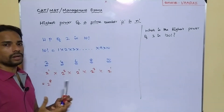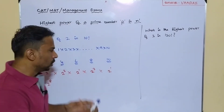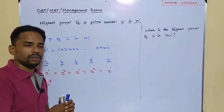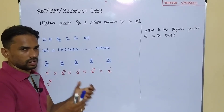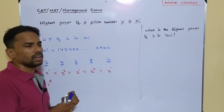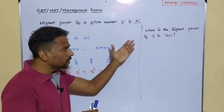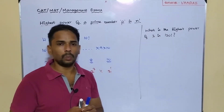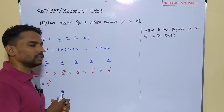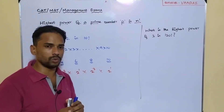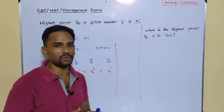But what if we get bigger numbers? Can you even imagine doing the same process for 120 factorial? For a very big number, we are going to execute a very easy shortcut. Let us see how that shortcut is going to work.